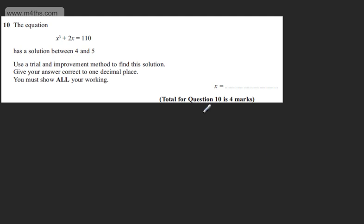This is question number 10 and it carries 4 marks. We're told the equation x cubed plus 2x equals 110 has a solution between 4 and 5. We're asked to use a trial and improvement method to find this solution. Give your answer correct to one decimal place.